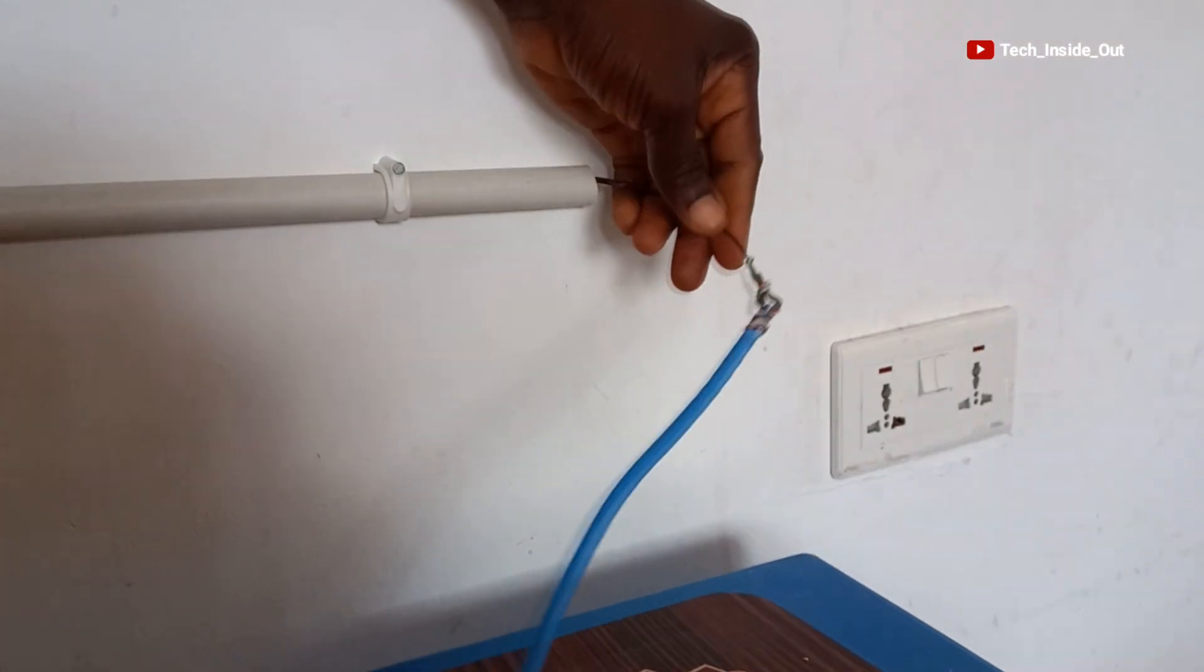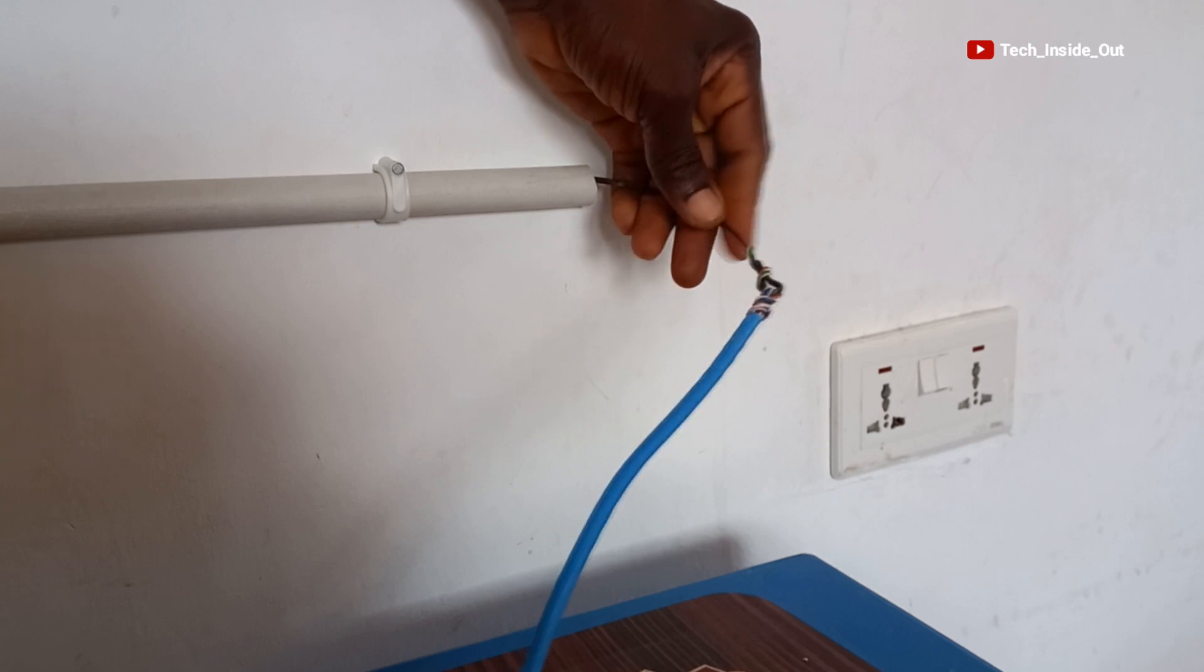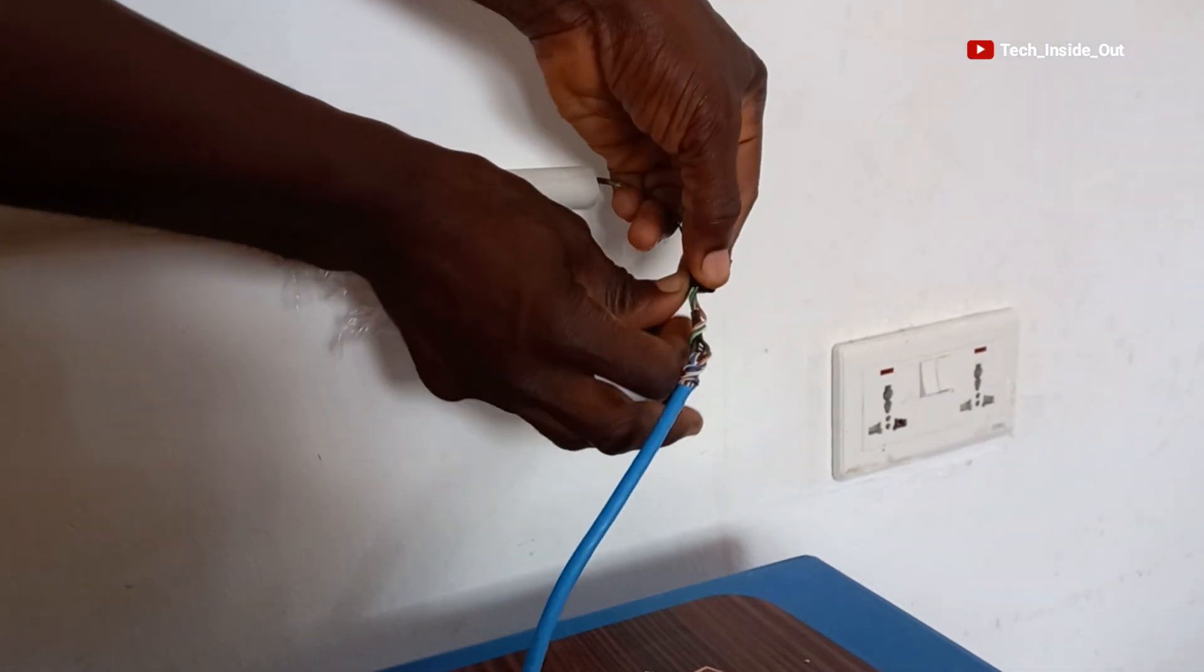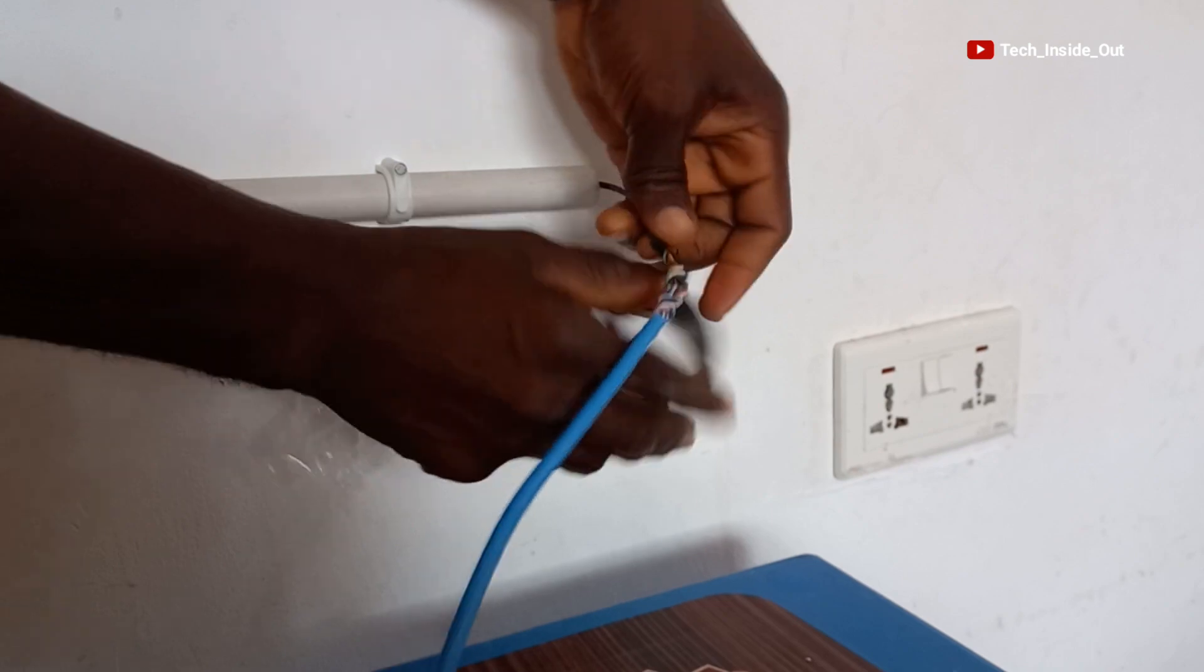So this is what we have. To further aid the smooth movement of this joint through the pipe, I will use an insulation tape and wrap around the joint.